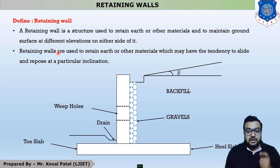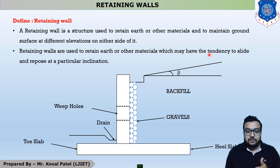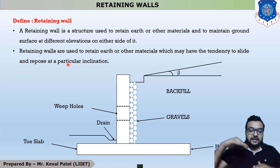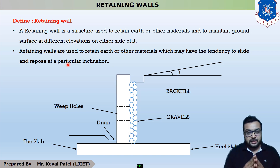Retaining walls are used to retain earth or any other material which may have the tendency to slide and repose at a particular inclination. This is the definition and the function of retaining wall.